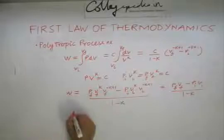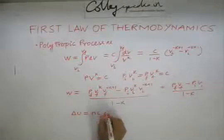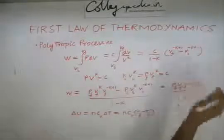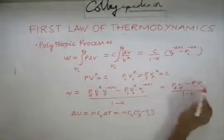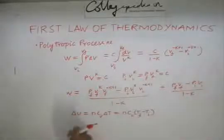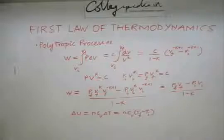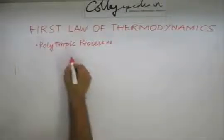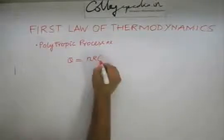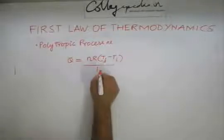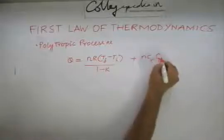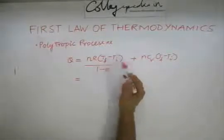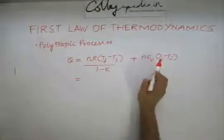The internal energy change is n c_v delta T, or n c_v times T_f minus T_i. Note that p_f v_f can be written as nRT_f and p_i v_i as nRT_i. We combine delta u and w to get q. From the work expression we get nR(T_f minus T_i) over 1 minus k, and from the internal energy expression we get n c_v (T_f minus T_i). This part gives n R delta T, and this part gives n c_v delta T, where c_v can be replaced with R over gamma minus 1.